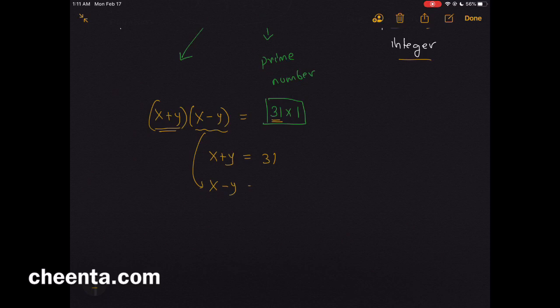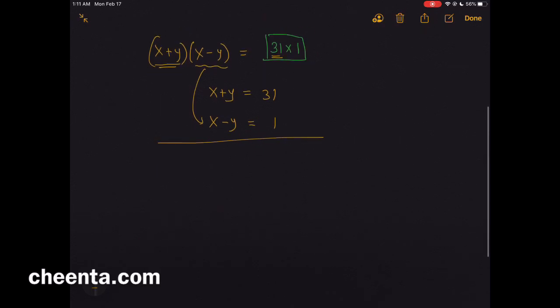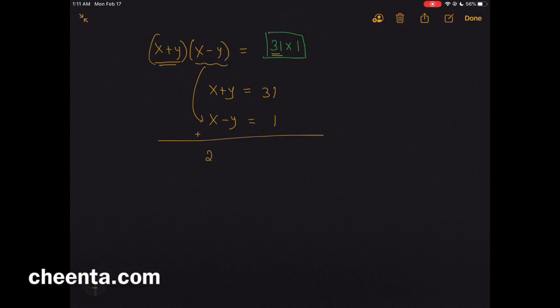So x - y = 1. Now you can solve both of these equations simultaneously. If you add those equations, you'll get 2x = 32, so x is 16. This gives us y is 15. This is the final answer.